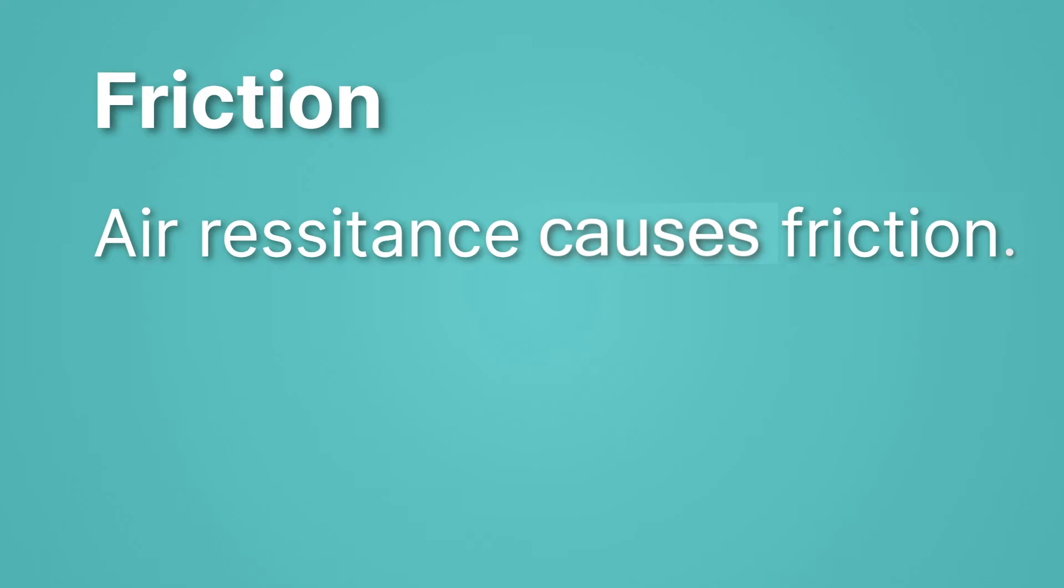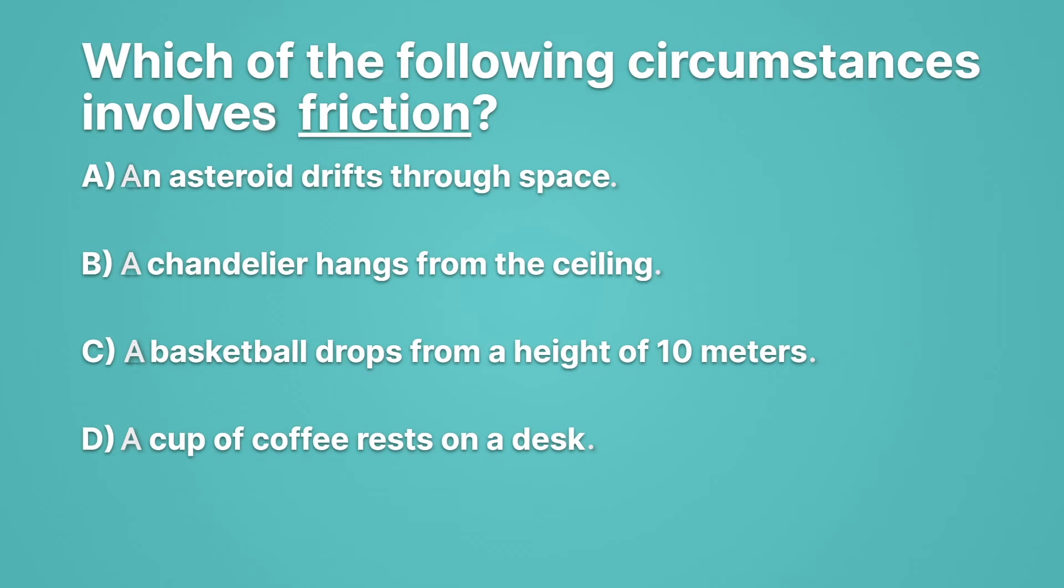All right. Now let's put this knowledge into practice. We're going to ask a few multiple choice questions that help you think about what forces are present. Which of the following circumstances involve friction? Well, A is an asteroid drifts through space. So remember, friction resists motion. And there, there's motion. But there's nothing else in contact with the asteroid because it's in space. So that's not friction. A chandelier hangs from the ceiling. Here, there's actually no motion. So there's no friction.